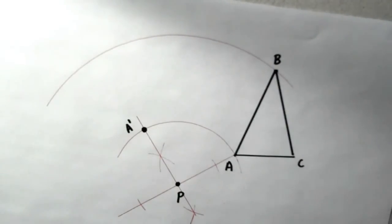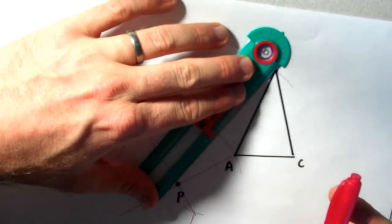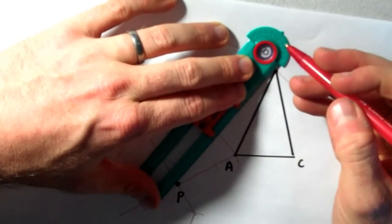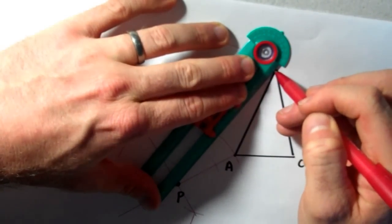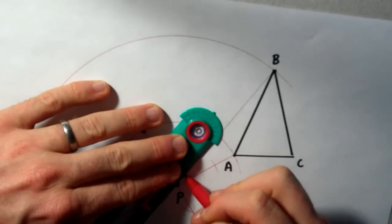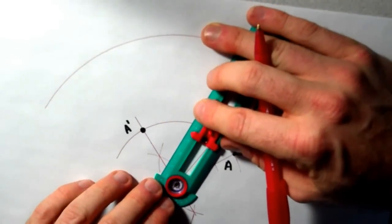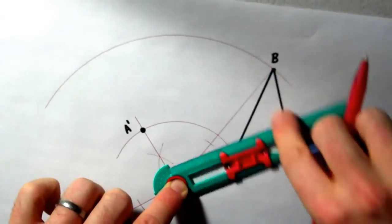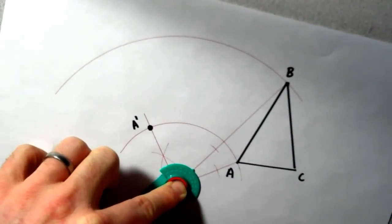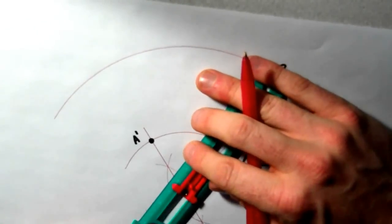And now I'm going to repeat that process with B. So I'm going to have to extend this a little bit. I can already see it's not going to be far enough. I'm going to extend this a little bit. And now again, I'm going to draw a perpendicular line through P. These constructions do tend to get a little messy.